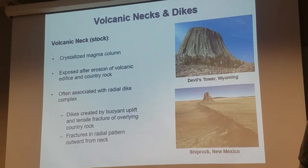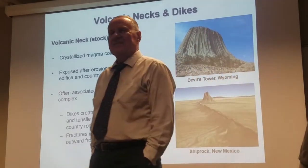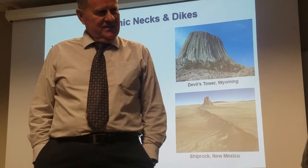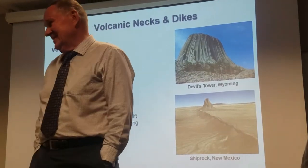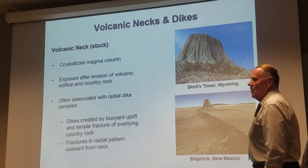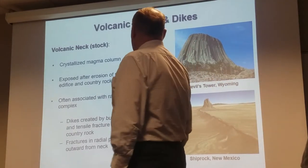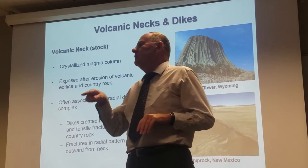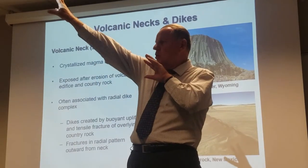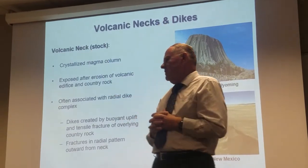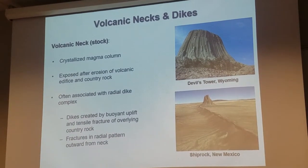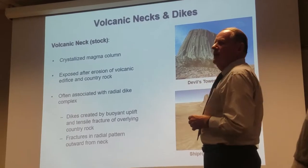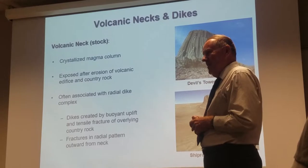Volcanic necks — everybody should recognize the top picture. It's Devil's Tower in Wyoming, featured in the movie 'Close Encounters of the Third Kind.' What does a volcanic neck represent? It's basically the vent coming up through the center of the volcanic edifice. Before erosion, there was a volcano sitting around it. The volcanic neck is the magma that solidified and crystallized in that vent column. Over time, the material forming the volcanic cone — which is relatively loose and unconsolidated — erodes away, exposing this more weather-resistant crystallized vent material. Notice the columnar jointing, which tells you the material that formed Devil's Tower was relatively fine-grained.